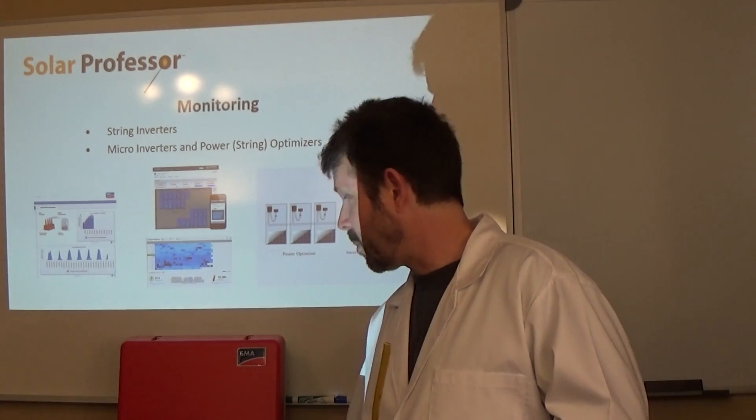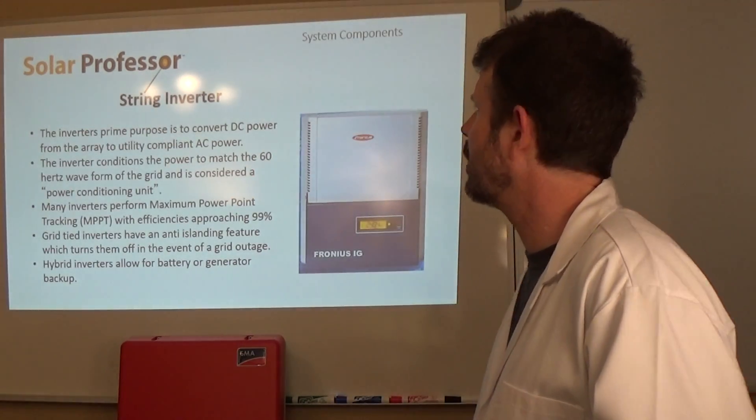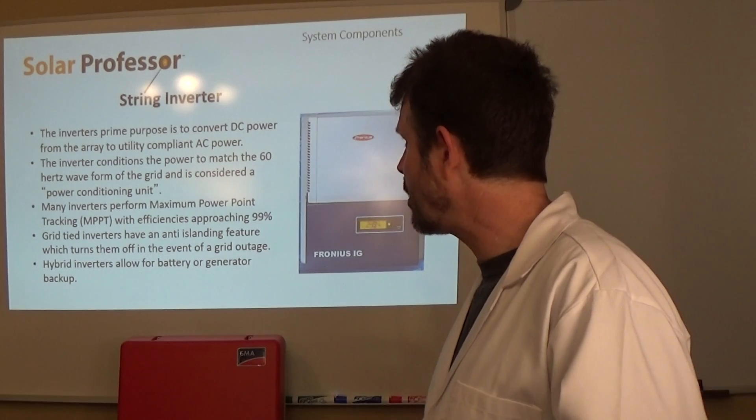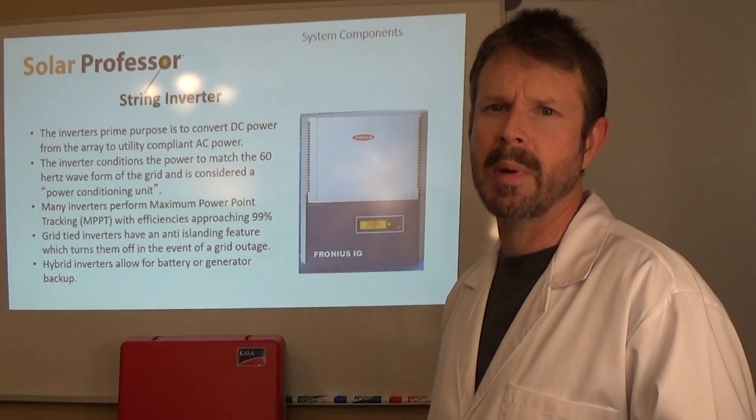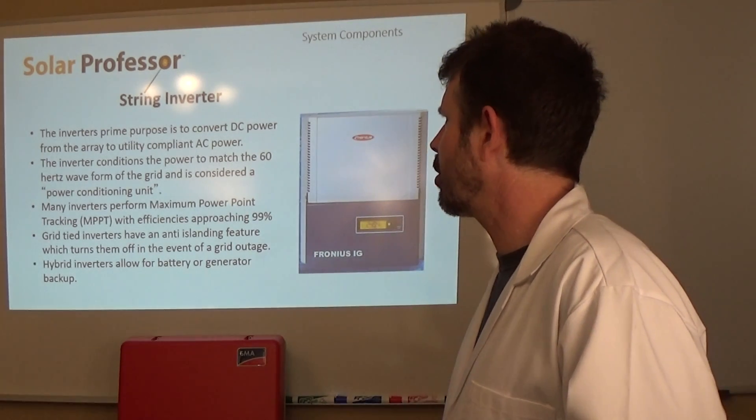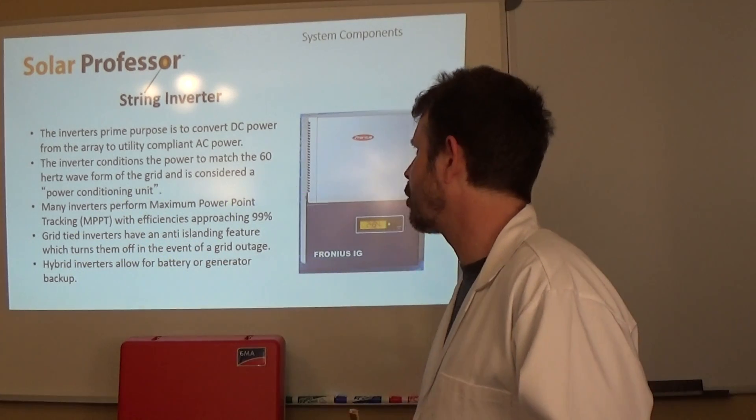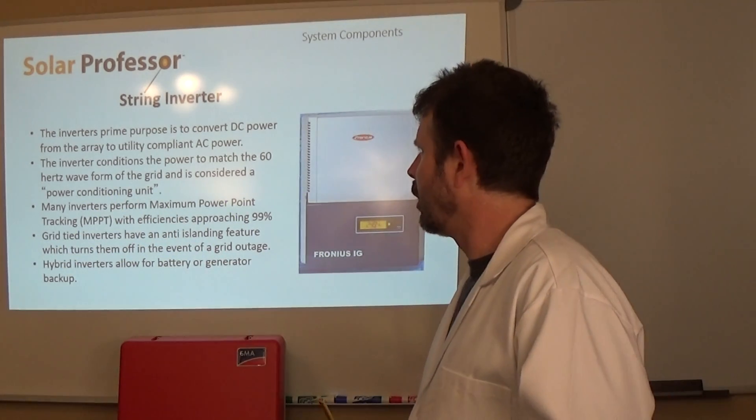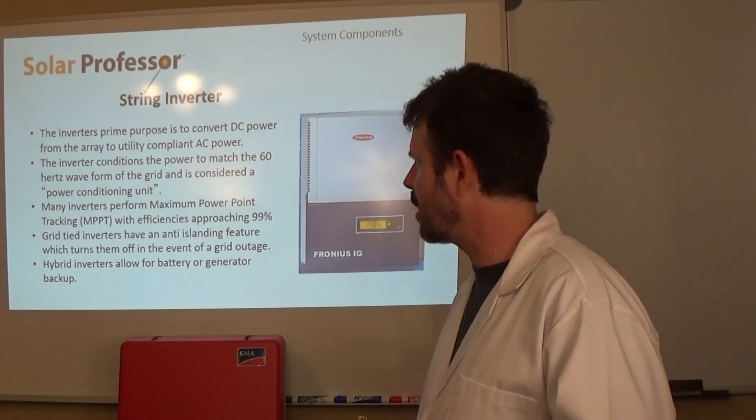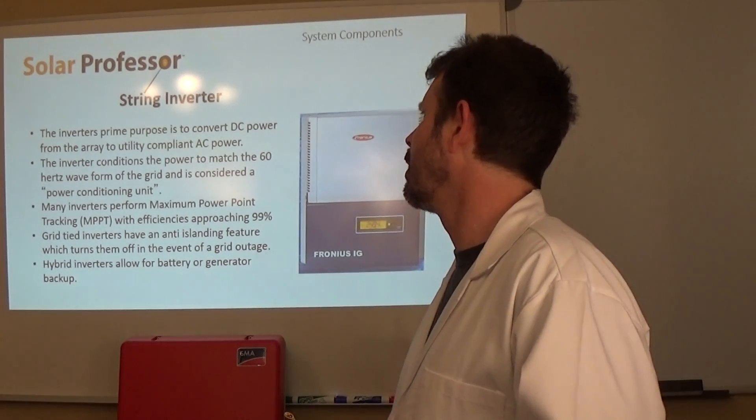Here's the string and specific string inverter. Inverters prime purpose is to convert DC power from the array to utility compliant AC power, so it has to match the power grid. The inverter conditions the power to match 60 Hertz waveform of the grid and is considered a power conditioning unit. Many inverters perform maximum power point tracking at 99% efficiency.